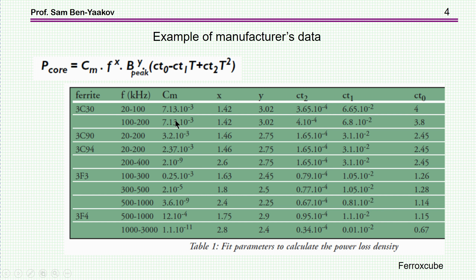In this case these coefficients are pretty close, but for other materials they are not the same. For example, for the 3C94, for this frequency range, C sub m is this value, and for this range it's a different value. The same thing goes for the x and y coefficients. However, once you know your operating conditions like the frequency range and the temperature, then of course you can do the calculation.